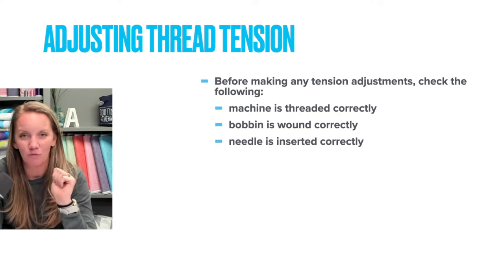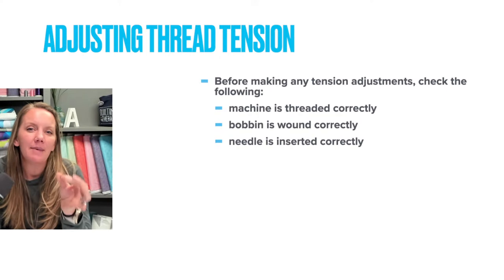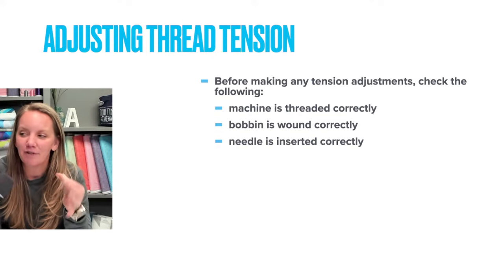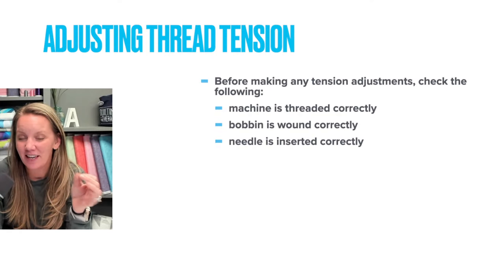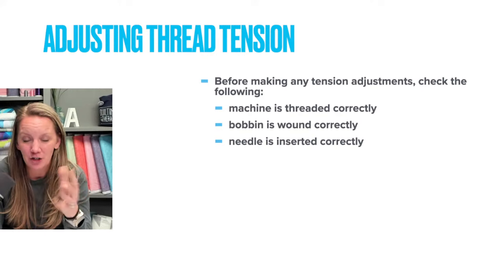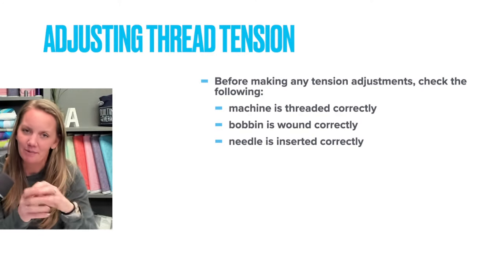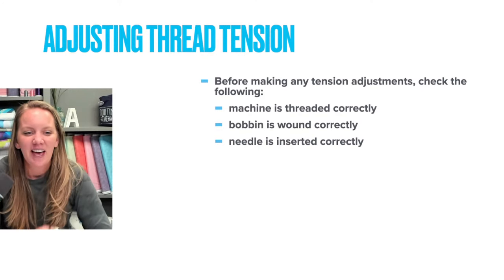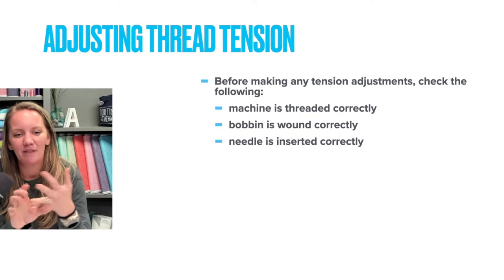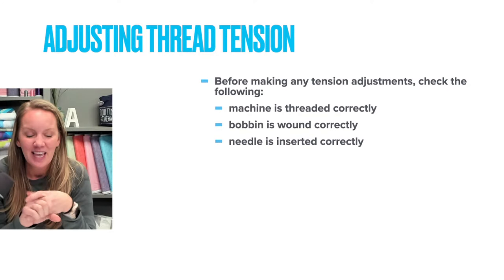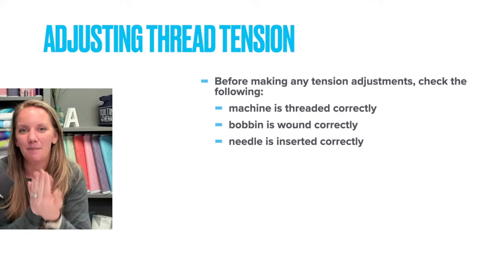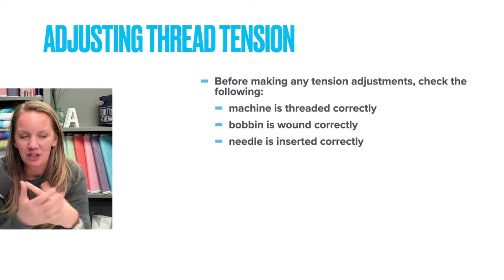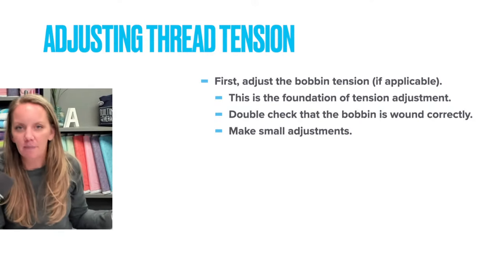If that happens, unwind the bobbin and rewind it. Or maybe it's wound correctly but every time you use that particular bobbin it's not working — it could be bent, so if it's the bobbin then it goes in the trash. Bobbins are important for machine quilting. And of course, make sure your needle is in correctly — if the needle is in backwards it won't be able to make a stitch, which will obviously lead to problems.